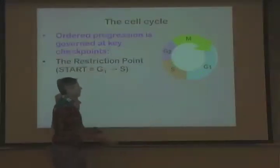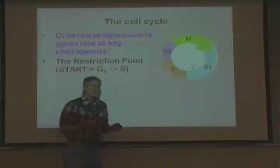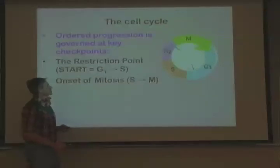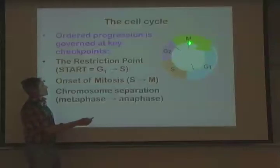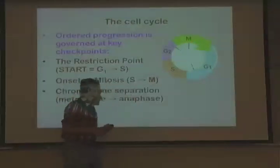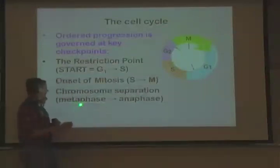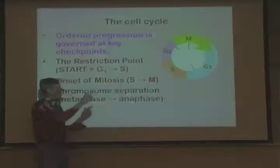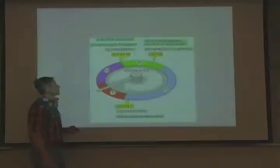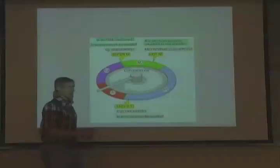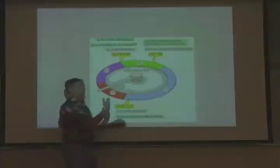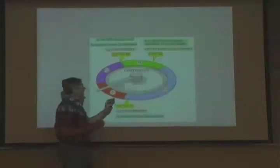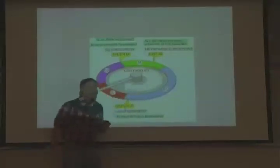The first checkpoint is the restriction point — the decision to enter the cell cycle or not. The second is whether or not to undergo mitosis. The third is the decision to separate the chromosomes from one another — that's called the metaphase to anaphase transition. You can think of it like a dial on a washing machine: you wouldn't want to enter the rinse phase before you get the soap out. Similarly, you wouldn't want to start DNA replicating until you're ready, and you wouldn't want to start separating chromosomes until all the DNA has been replicated.